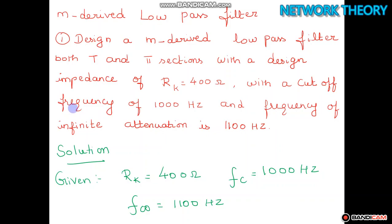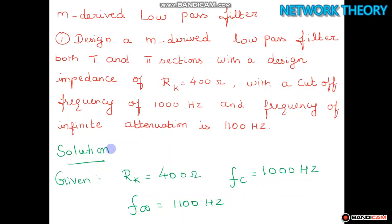In the question, the given values are: design impedance Rk = 400 ohms, cutoff frequency fc = 1000 Hz, and frequency of infinite attenuation f∞ = 1100 Hz. We have to design an M-derived low-pass filter for both T and pi sections. So with the given values Rk = 400 ohms, fc = 1000 Hz, f∞ = 1100 Hz, this is a direct solution.